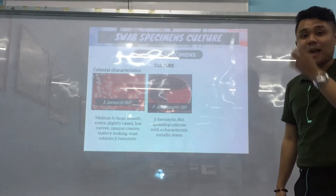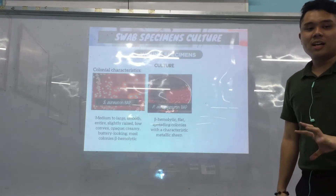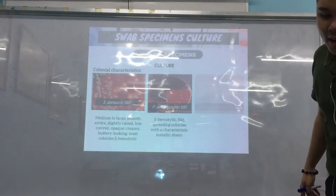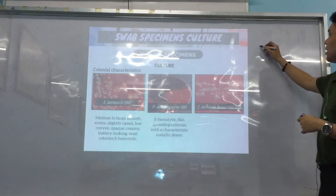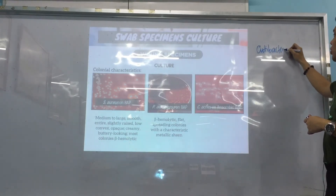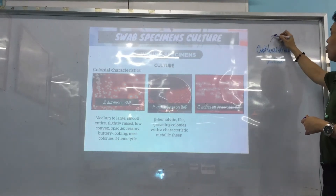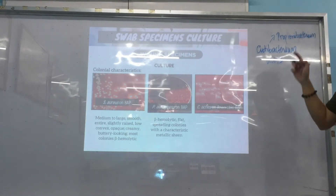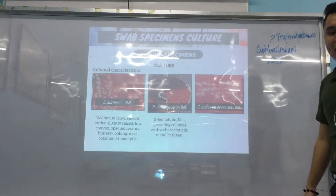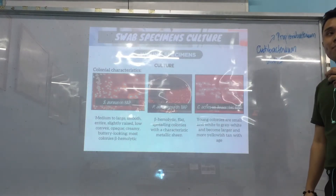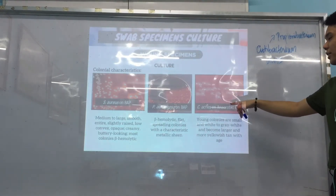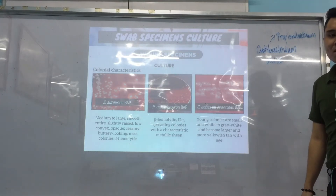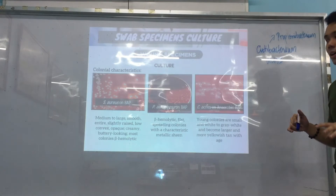Pseudomonas aeruginosa also shows flat, spreading colonies on BAP. We also have an anaerobe example: Cutibacterium acnes — formerly called Propionibacterium acnes — usually involved in the inflammatory process of acne. On BAP, C. acnes colonies are white to gray and may become yellowish with age. Those are the culture characteristics to know for wound specimens.